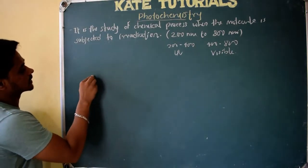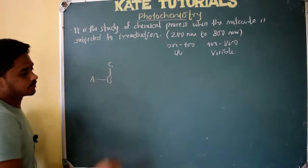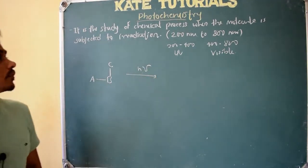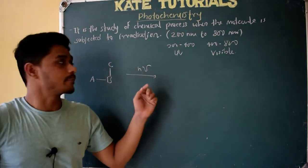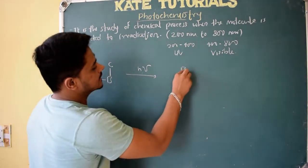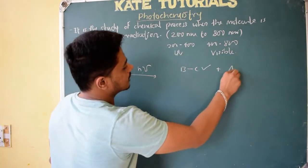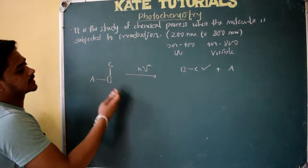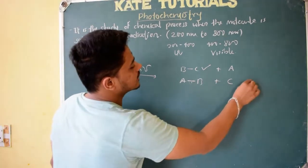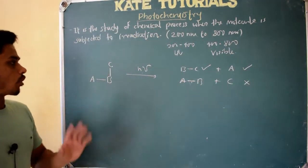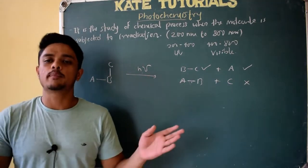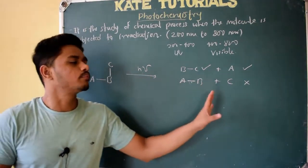Before going further, let us see a few more things. I have one molecule, and I will irradiate light — the symbol for photochemistry means photons, shown by the symbol hν. The product BC is formed and product A is also formed. You may ask why not AB and C. I will tell you this product is not formed and this one is formed. In photochemistry reactions, many product possibilities exist, but in books only a few products are given.